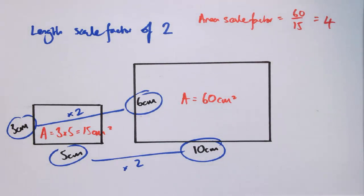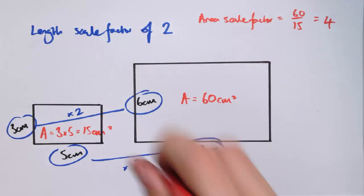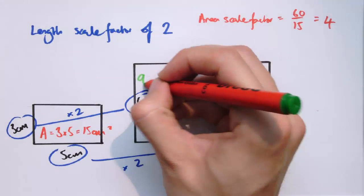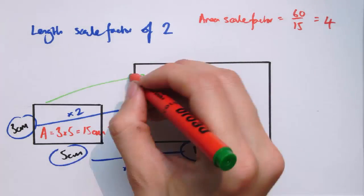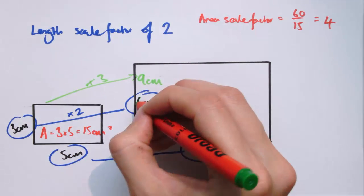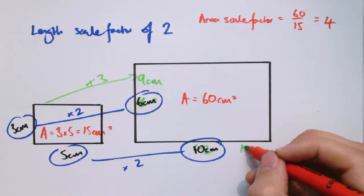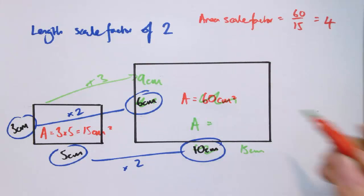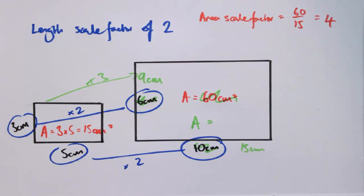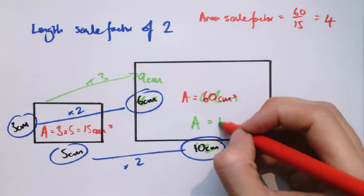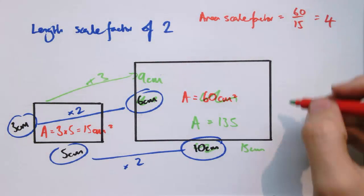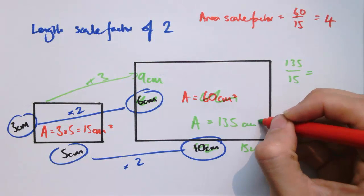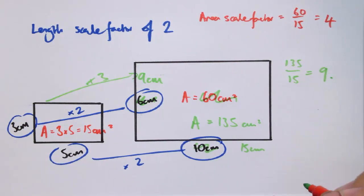If we were to change the scale factor, let's leave this one as 3 by 5, but if we change this one and said it was actually a scale factor of 3 applied instead, so this was 9 cm and this was 15 cm, we would get an area instead of 60 of 9 times 15, or 135. And you can check that 135 divided by 15 is 9.